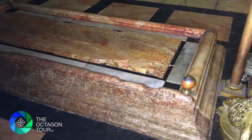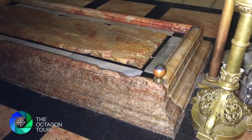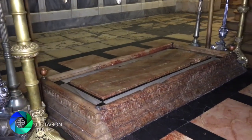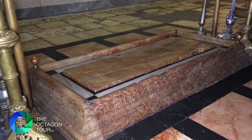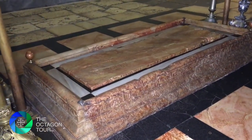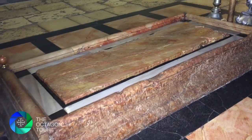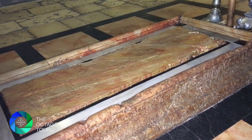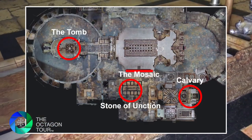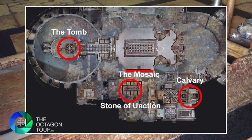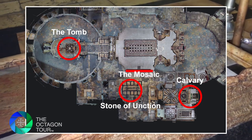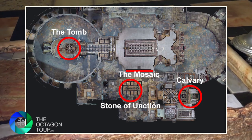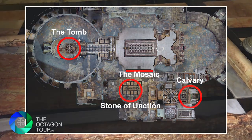The Crusaders were the first ones to put a marble slab here in the 12th century, but that was destroyed in the fire of 1808, and this slab that you see here is its replacement. It's almost exactly the same distance from the altar of Calvary as it is from the tomb of Jesus, which is why the Crusaders put it here.